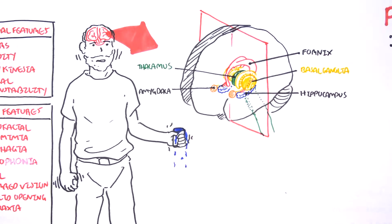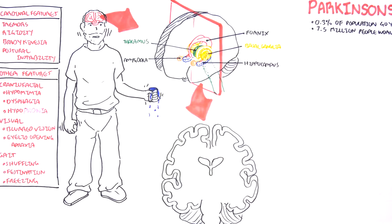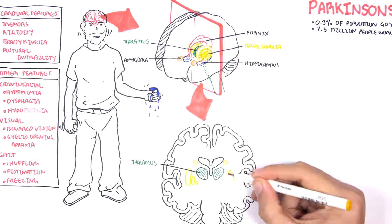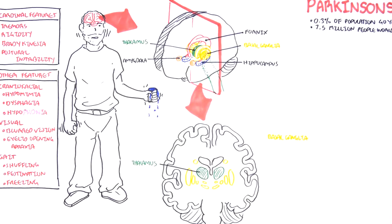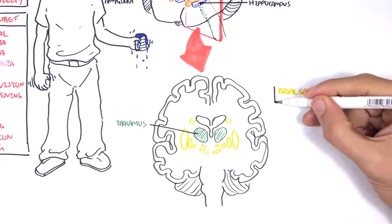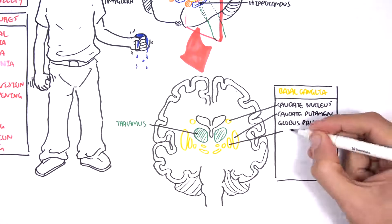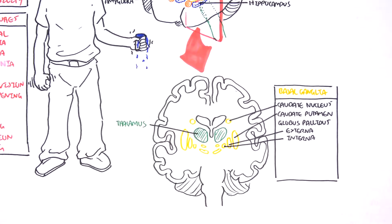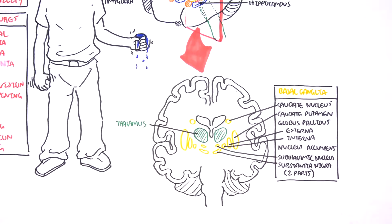Let's take a coronal section of the brain and look at the basal ganglia in a bit more detail. Here in green is the thalamus. The structures in yellow are part of the basal ganglia. The basal ganglia is made up of the caudate nucleus, caudate putamen, putamen, the globus pallidus (external and internal parts), the nucleus accumbens, the subthalamic nucleus, and the substantia nigra, which consists of two parts. We also have the amygdala and hippocampus here.